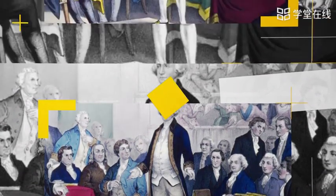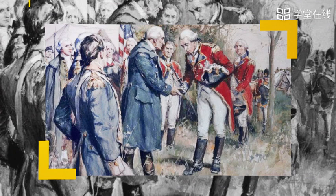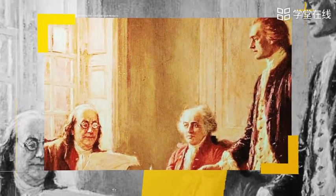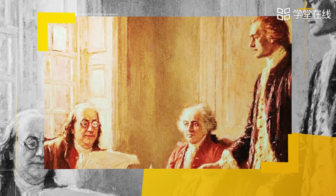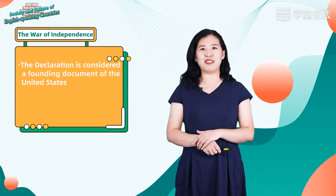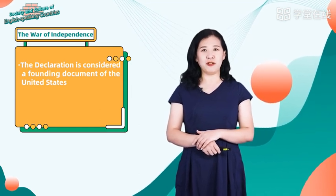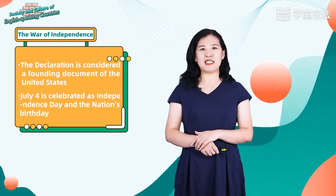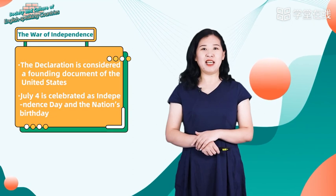The Congress founded the Continental Army and the Navy under the command of George Washington. Thomas Jefferson drafted the Declaration of Independence. On July 4, 1776, the Congress adopted the Declaration. The Declaration presented a public defense of the American War of Independence, and is considered a founding document of the United States, where July 4 is celebrated as Independence Day and the nation's birthday.